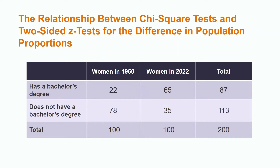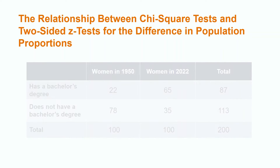Let's say we want to determine if there is a difference in the proportion of a sample of 100 American women 25 and older with a bachelor's degree in 2022 versus 1950. We will calculate both the test statistics and p-values using a chi-square test for homogeneity as well as a z-test for the difference in population proportions, beginning with the chi-square test statistic and associated p-value.